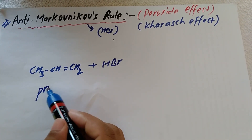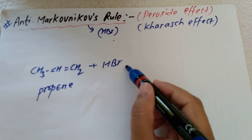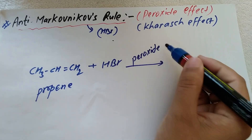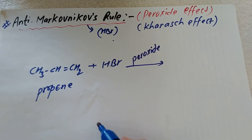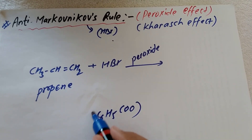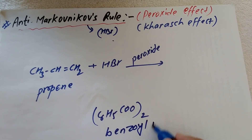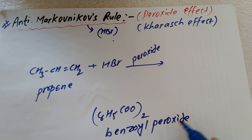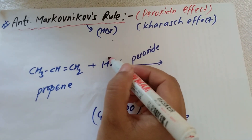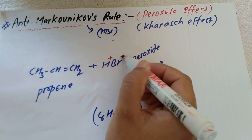The unsymmetrical alkene propene reacts with the unsymmetrical reagent hydrogen bromide in the presence of organic peroxide. An example of organic peroxide is benzoyl peroxide, C6H5COO− — benzoyl peroxide.